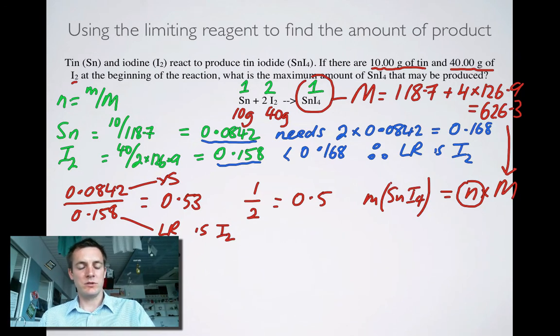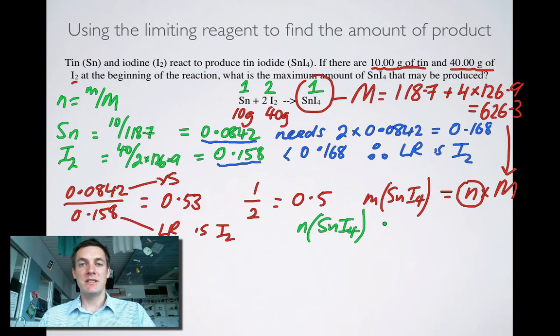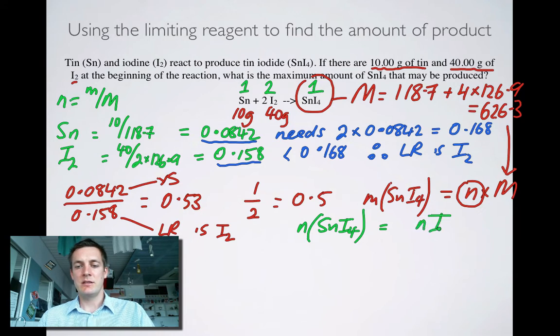Well, let's just switch colors again, because it's nice and colorful. The number of moles of tin iodide, we're going to have to relate that to our limiting reagent. It doesn't matter about the excess because there's more than enough of it. There's going to be some leftover. Okay, so the number of moles of tin iodide is going to be related to our number of moles of iodine. Is that true the way I've written it? Well, no, because the number of moles of tin iodide is 1, whereas the number of moles of iodine is 2. So the number of moles of tin iodide is actually half the number of moles of iodine.